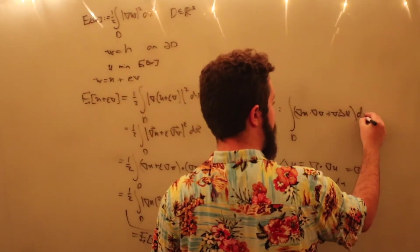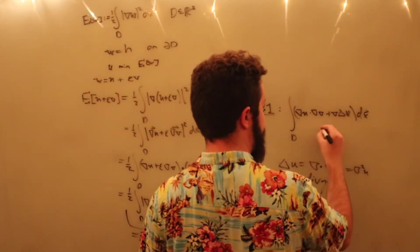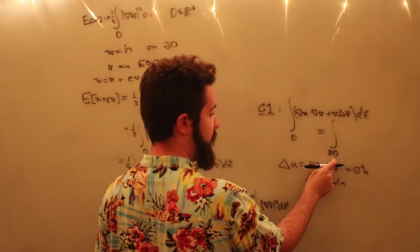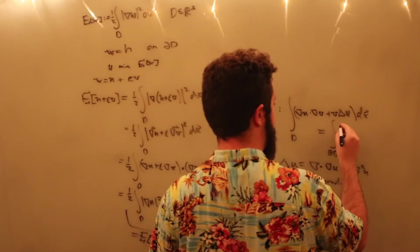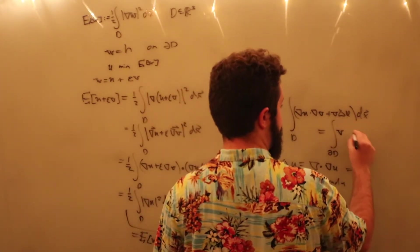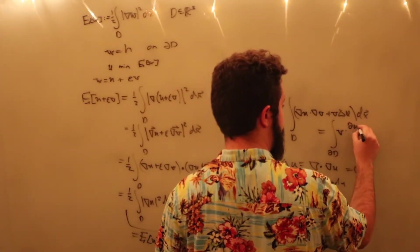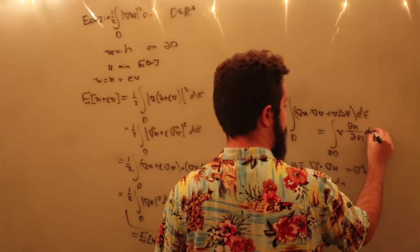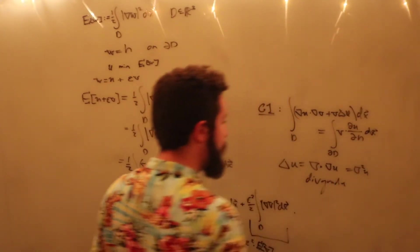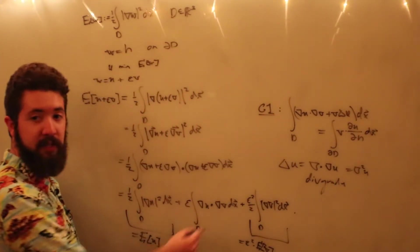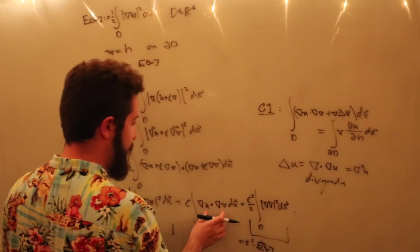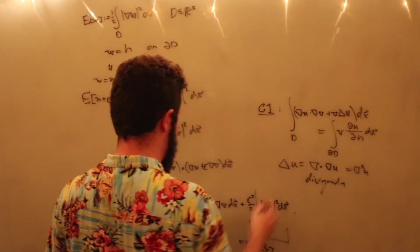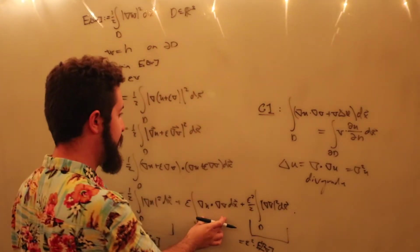Alright, over d is going to be equal to the boundary integral, so the integral across boundary d, of v times the directional derivative of u in the outward normal direction times dx. Okay, so we're going to make a substitution using this, because we have this term. So that means we can move this to its own side, or rather move this to the other side, and then substitute for this integral. So that's what we're going to do.